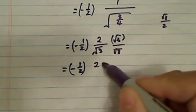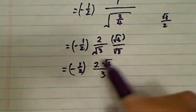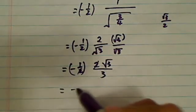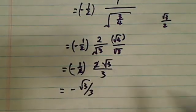As a matter of fact, this is 2√3 over 3, and the 2s cancel. So we have minus √3 over 3.